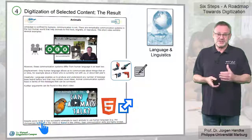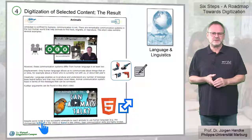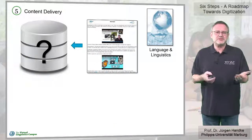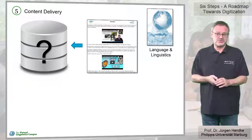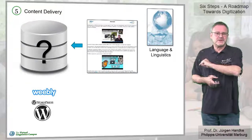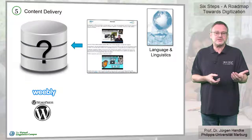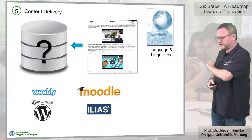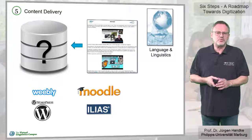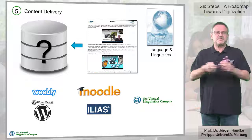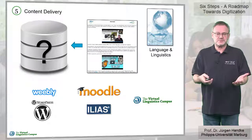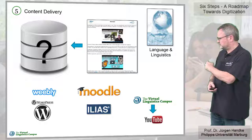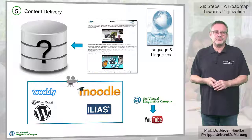Having digitized the content — which is admittedly the most complex step on our roadmap and will be addressed in more detail in a separate video — we now have to decide where and how to deliver the digital content. There are several options: we can use web applications that allow creating and hosting websites such as Weebly or WordPress; we could use an institutional learning management system if we have one, such as Moodle or Ilias; or we can even create our own platform such as the Virtual Linguistics Campus. And for the videos? If you want to make them available to the whole world, use YouTube like we do. If not, upload them to your private web environment.